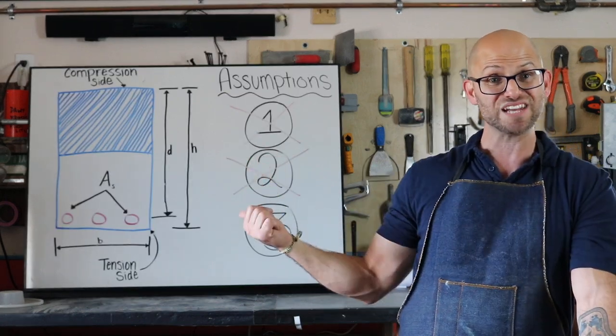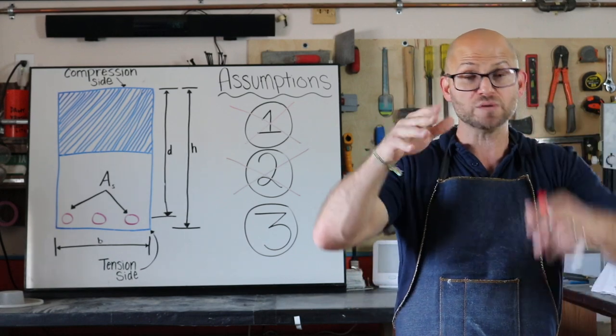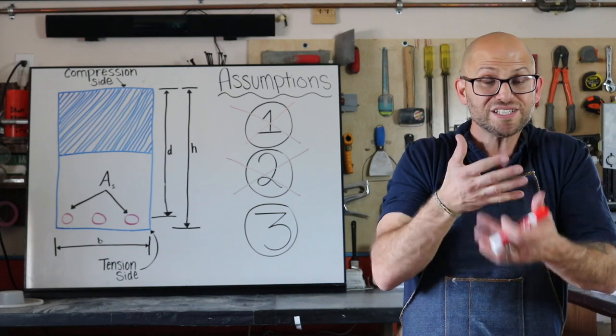And if you drive on Santa Fe in Denver, those columns for the underpasses underneath the rail, they're failing. Like, you can see the steel.